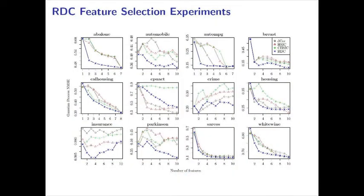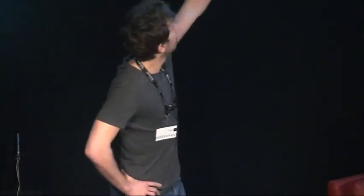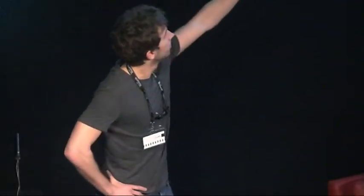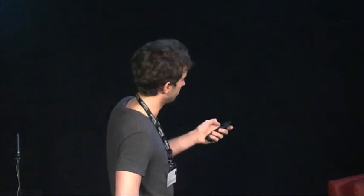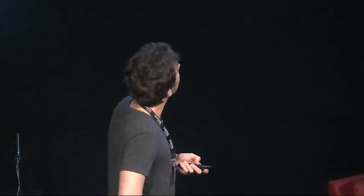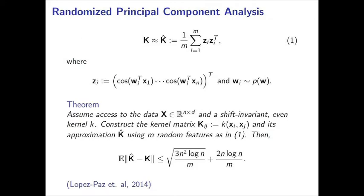We also did some feature selection experiments using Gaussian process regression. We select two, four, six, and more features greedily by maximizing the dependence between the selected features and the output we are trying to regress to. The performance here is surprisingly good.